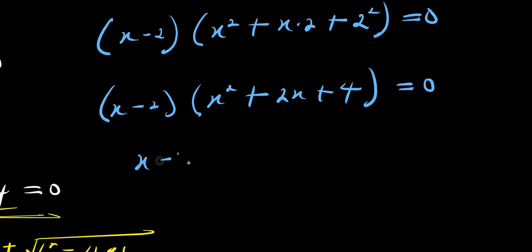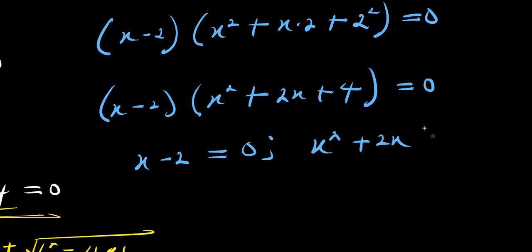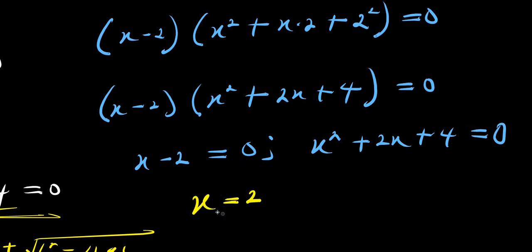From here we have x minus 2 times x squared plus 2x plus 4 equals 0. Setting each factor to zero: x minus 2 equals 0 gives x equals 2, which is x4. We also have x squared plus 2x plus 4 equals 0 to solve for the remaining values of x.